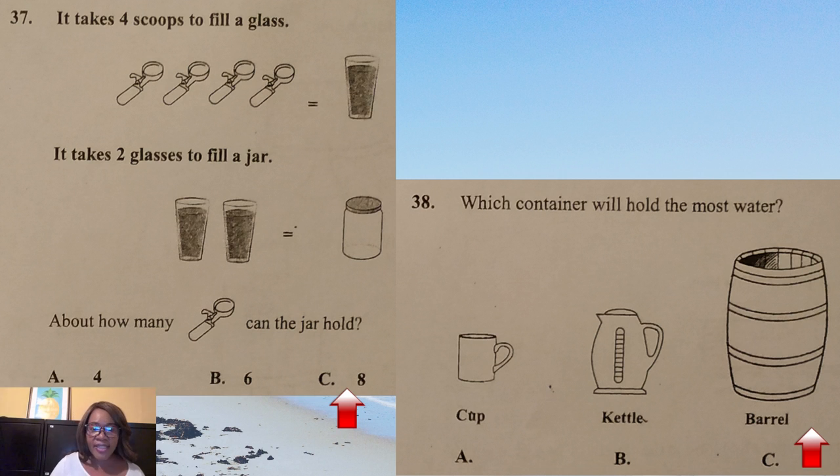Question 37: It takes 4 scoops to fill a glass. It takes 2 glasses to fill a jar. So, 4 scoops to fill one glass. Another 4 scoops. And we have 2 glasses together to fill one jar. So, 4 plus 4 equal 8. So, the answer would be option C, 8. Let's look at question 38. Which container will hold the most water? Is it option A, a cup? Option B, kettle? Or option C, a barrel? Now, this one is easy, cheesy, lemon squeezy. Most of our young students, they're familiar with the rainwater barrel, garbage, a barrel to collect garbage, or even one sent from abroad with lots of goodies inside for children to use. So, right away, they will pick up that option C, the barrel, will hold the most water. As long as they understand the concept of least and most and equal to, this one is easy for them.